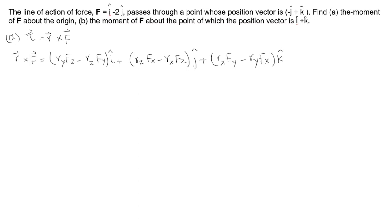and F are given in rectangular components, so I can plug those values in. ry is -1 and fz is 0 because there is no component with k unit vector. rz is 1 and fy is -2